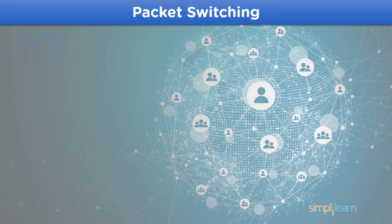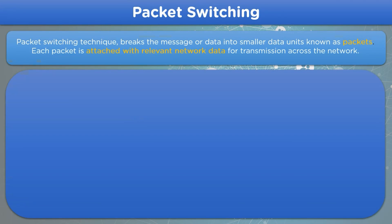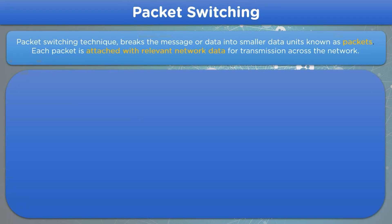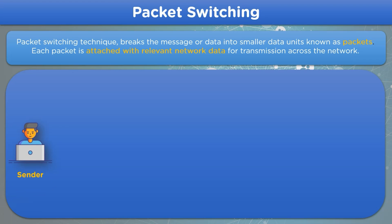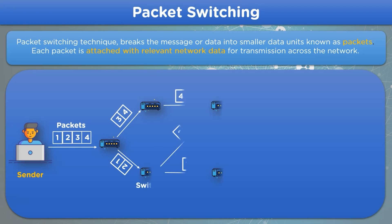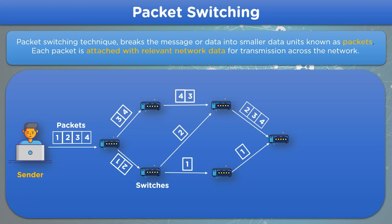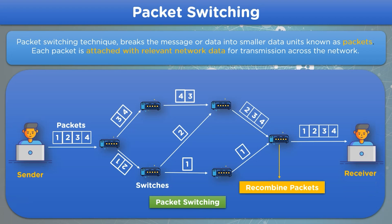Now let's look into the last switching technique: packet switching. In packet switching, the message is broken into smaller data units known as packets. These packets are appended with relevant network details for transmission over the network. Each packet is given a sequence number for identification. The packets are integrated with the required sender and receiver address and use a switching method to choose the shortest route to reach the destination node. These packets are then recombined at the destination node in the correct sequence order.